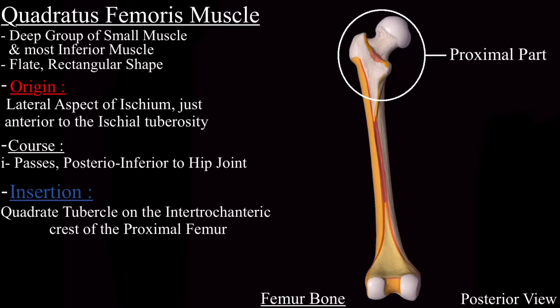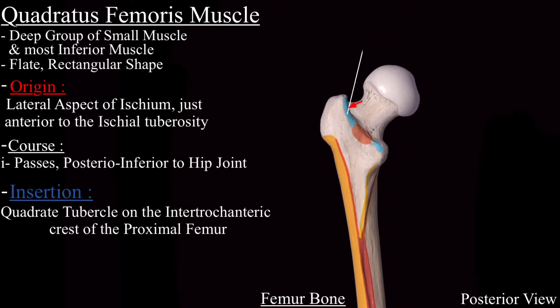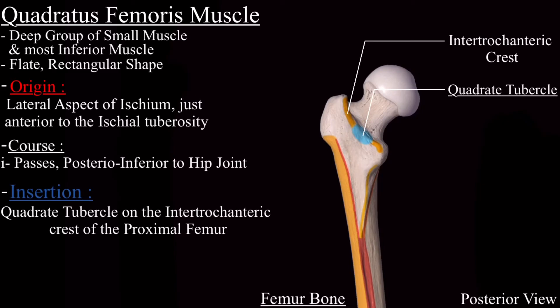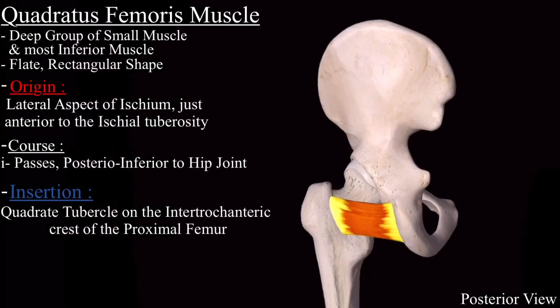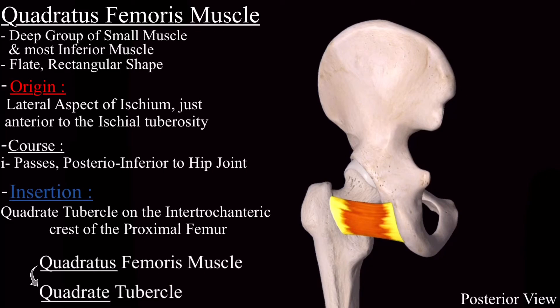It then inserts on the quadrate tubercle on the intertrochanteric crest of the proximal femur. This is the proximal part of the femur bone. The highlighted blue line is the intertrochanteric crest, and on that crest is the quadrate tubercle where the quadratus femoris muscle inserts. It is easy to remember: quadratus muscle inserts on the quadrate tubercle — the name gives us a clue about its insertion.